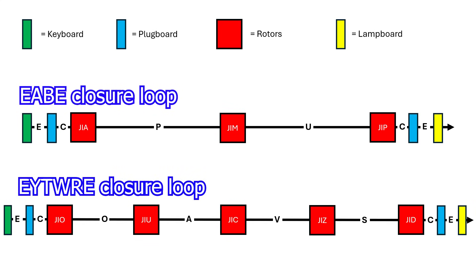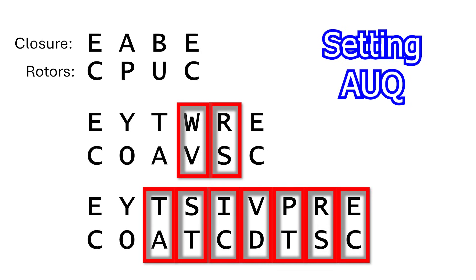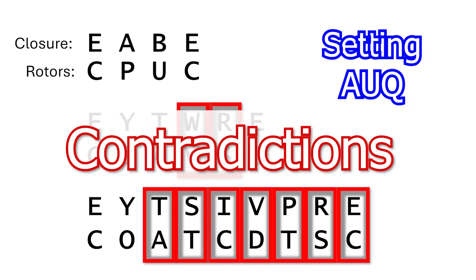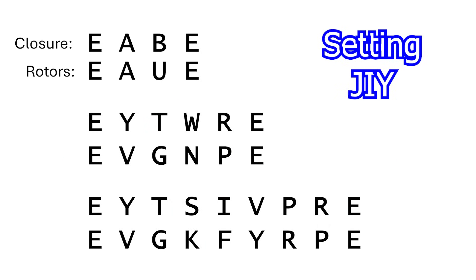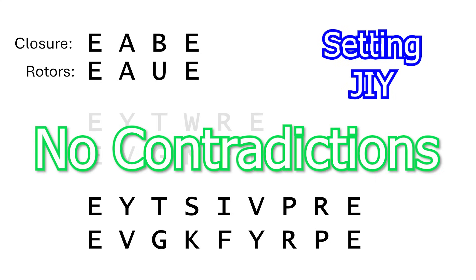Next, we check to see that the inferred plugboard mappings for a given rotor setting and key letter mapping don't contradict each other, either within a loop or between the loops. This leads to a possible solution, if we can accurately guess the crib and its location.